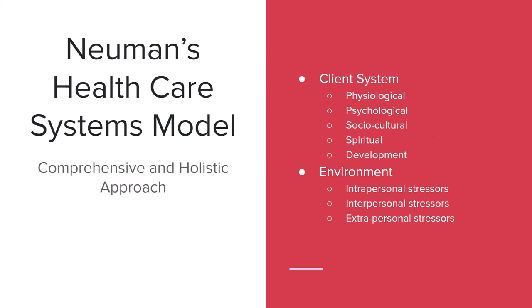Next up, we've got Newman's Healthcare System Model, which is a comprehensive and holistic approach. The idea is that each individual is their own system. Each client has, like a concentric circle, five things that affect them: the physiological, psychological, sociocultural, spiritual, and developmental. These are all individual systems inside a person that are affected by stressors in their environment — both internal and external — which play a role in their general system inside their body.